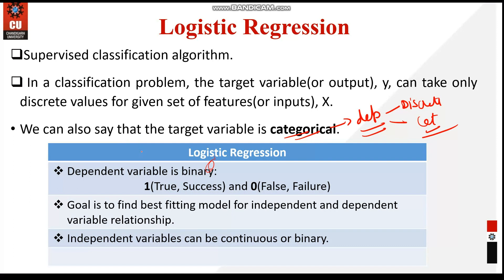Linear regression is used for solving regression problems, whereas logistic regression is used for solving classification problems. In logistic regression, instead of fitting a regression line as in linear regression, we have an S-shaped curve — the sigmoid curve. This curve indicates the likelihood of something, such as whether cells are cancerous or not.